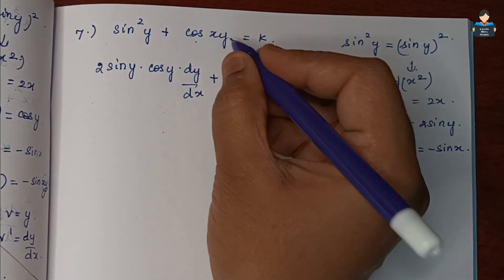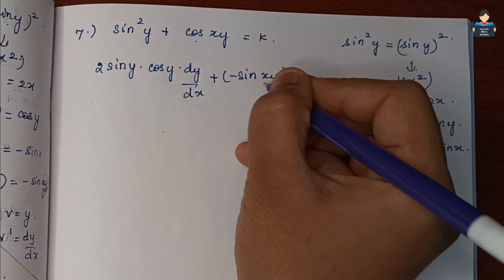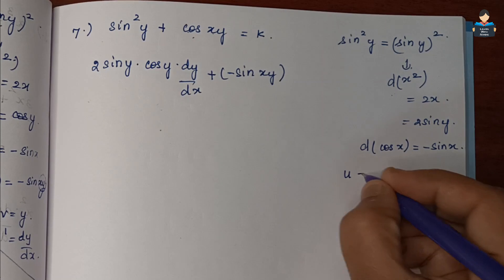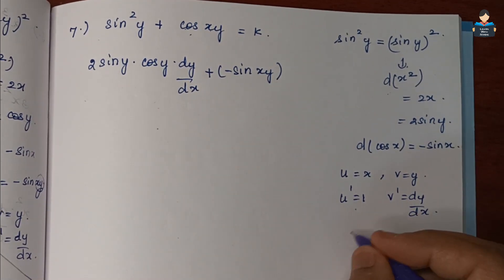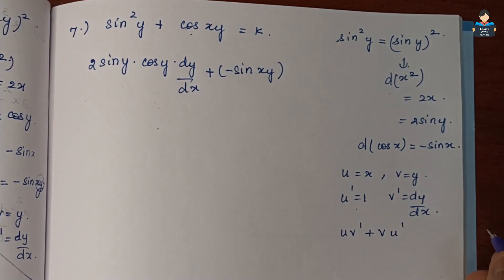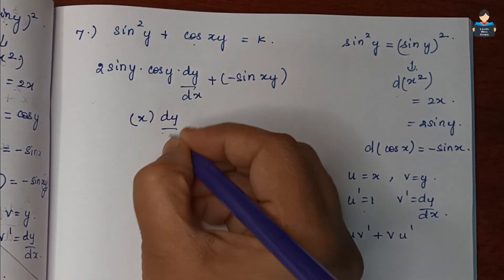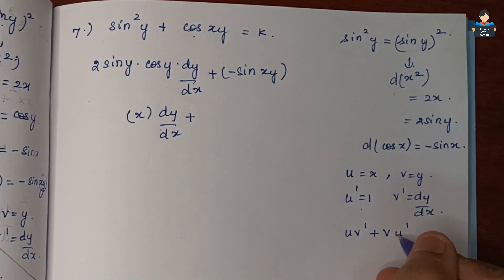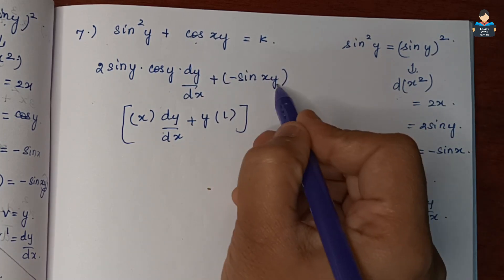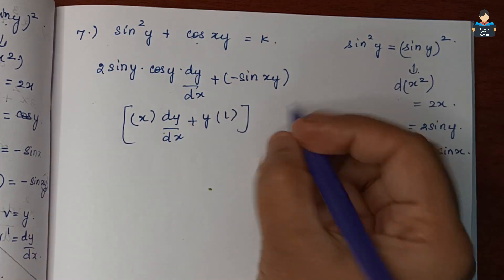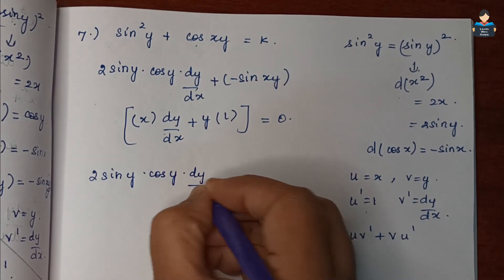For cos(xy), differentiation of cos is -sin, so we get -sin(xy). Inside xy we apply the product rule: x · dy/dx + y · 1. So the full derivative of cos(xy) is -sin(xy) · (x · dy/dx + y).